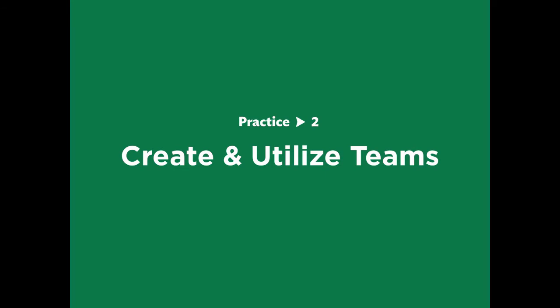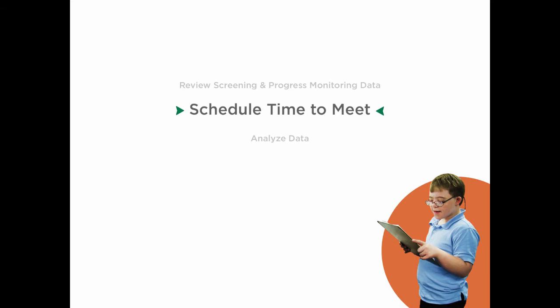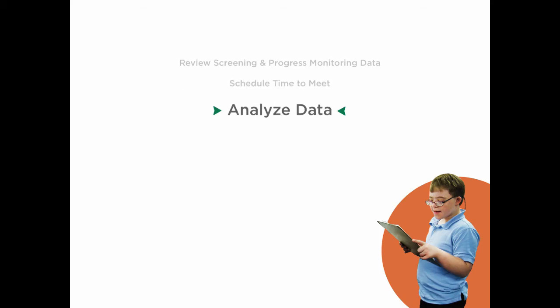Practice 2: Create teaming structures and engage in data-based planning. It's important that a team review screening and progress monitoring data. Organize school teams to review this data, and this team should include both grade level and specialized educators. Schedule time for teams to meet regularly to review student screening and progress monitoring data, then create a process to analyze data at the school, grade, and individual student level.